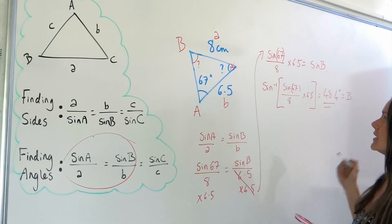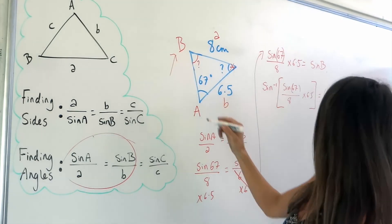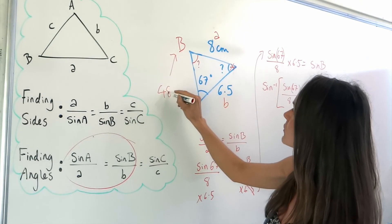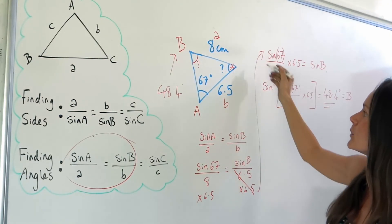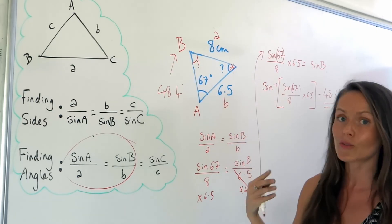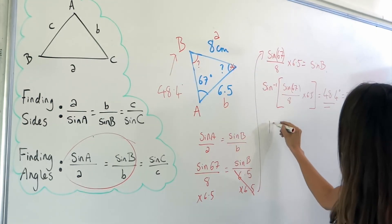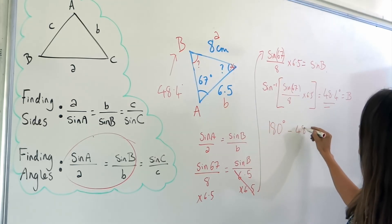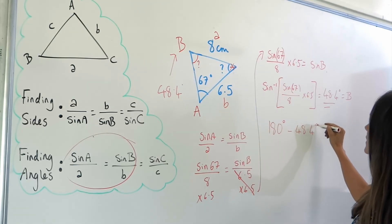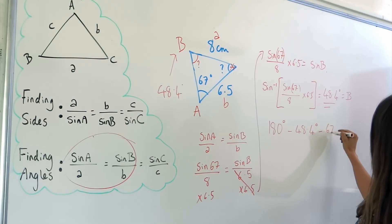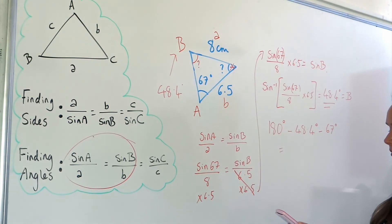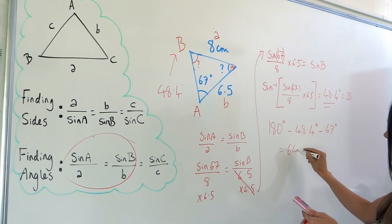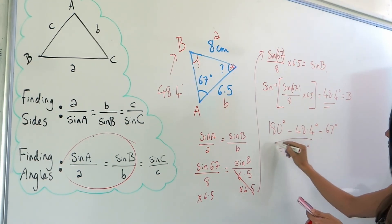So that was angle B. The question asked for the angle at the top, so we subtract both known angles from 180 degrees. All angles in a triangle add up to 180 degrees, so 180 minus 67 minus 48.4 gives a final answer of 64.6 degrees.